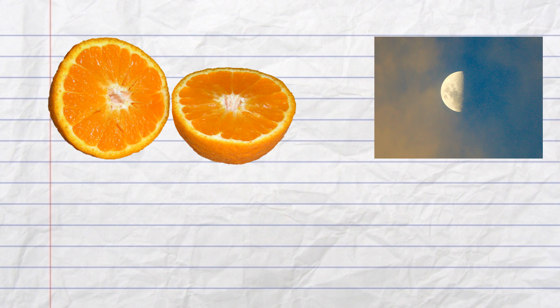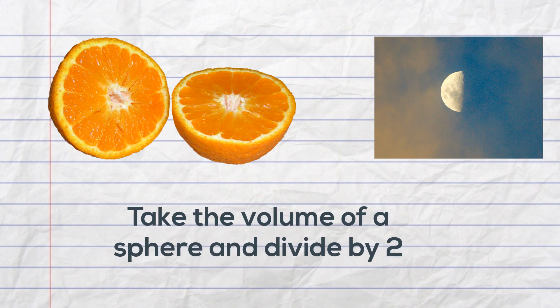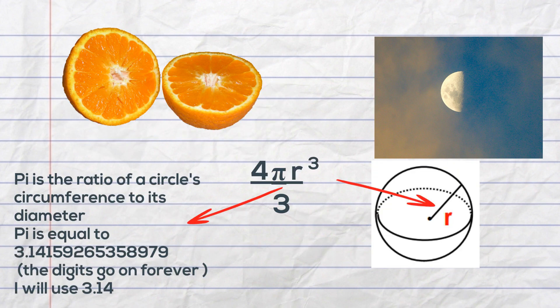You can find the volume by taking the volume of a sphere and dividing by two. The volume of a sphere is four times pi times the radius cubed divided by three. And then you would take one half of that or divide by two for the volume of a hemisphere.